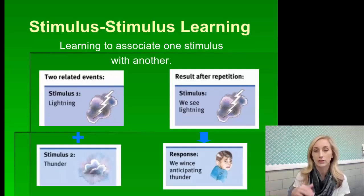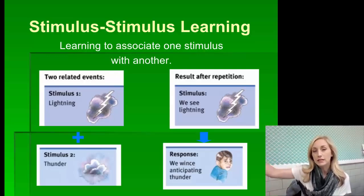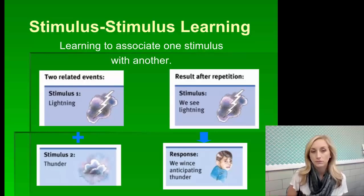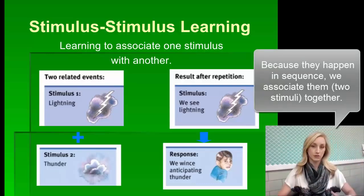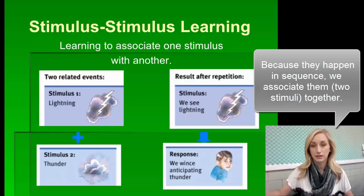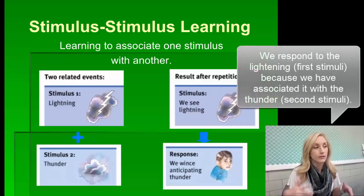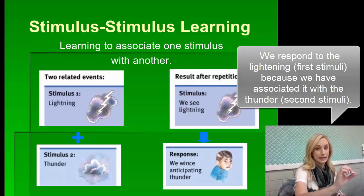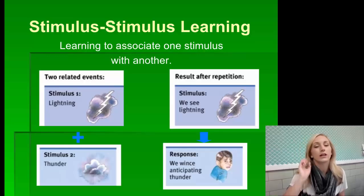There is stimulus-to-stimulus learning — learning to associate one stimulus with another — and this is what classical conditioning is. Make sure you understand this, because this is what makes it different from operant conditioning. For instance, one stimulus is lightning and the second is thunder. After repeated pairings, when we see lightning we wince, anticipating the thunder. We have associated lightning with thunder, so even though lightning itself isn't necessarily scary, we still respond to it.